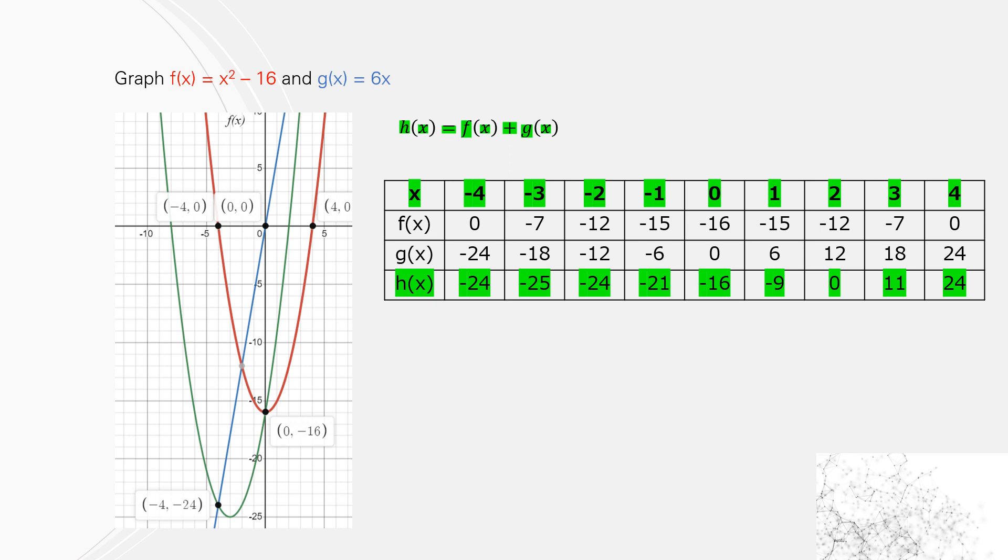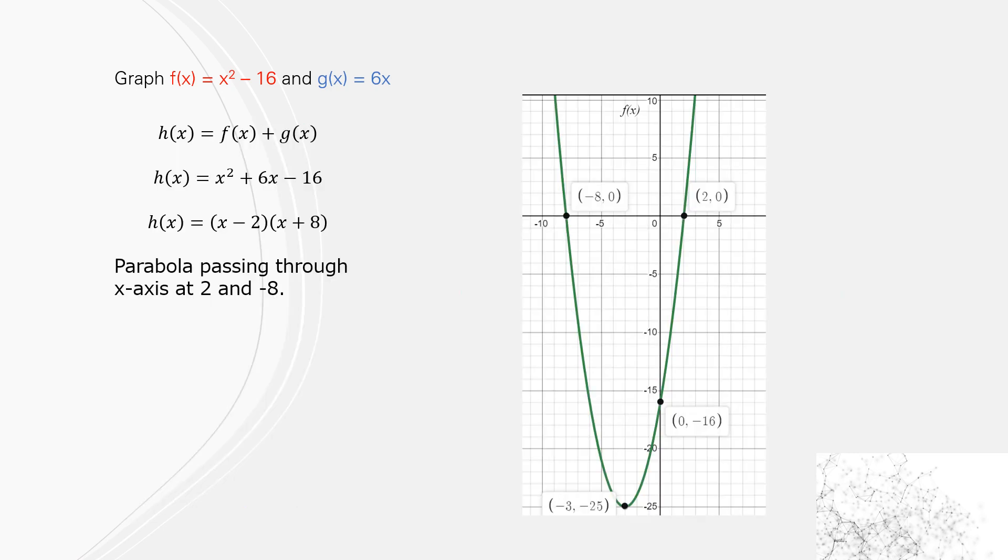So when we look at that, and if we were to plot all of those by hand, we would form what looks like a parabola. You can see that in green, we have now plotted all of the x-values with the corresponding y-values for h(x). If we were to solve this, f(x) + g(x) = x² - 16 + 6x. That's a parabola that passes through 2 and -8, and that's what we had before. Obviously halfway between 2 and -8 is -3, and that becomes our vertex.